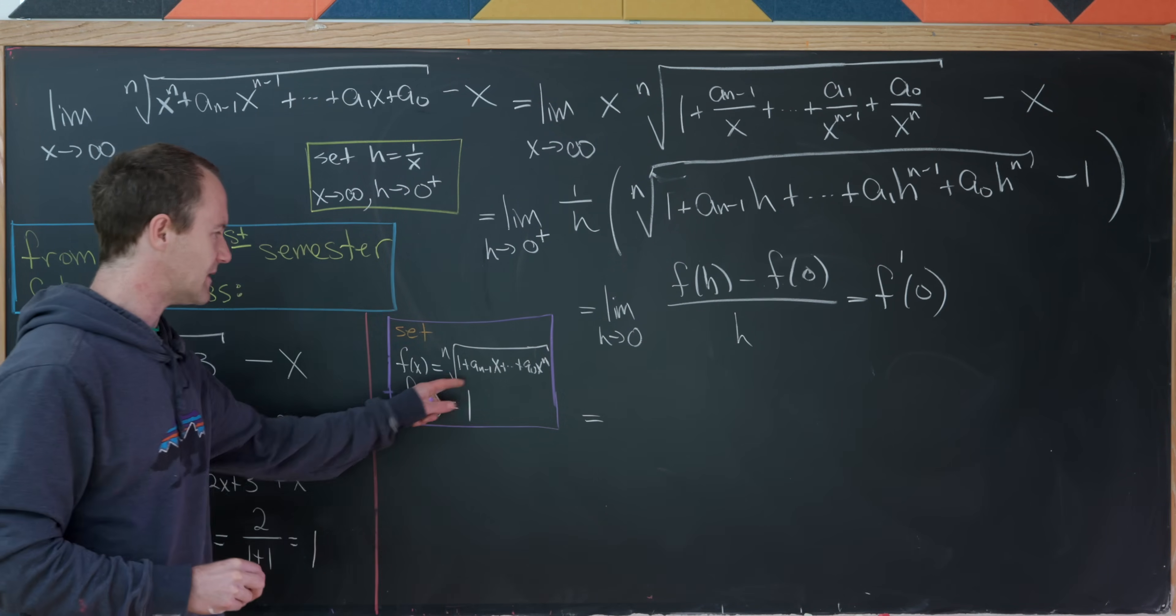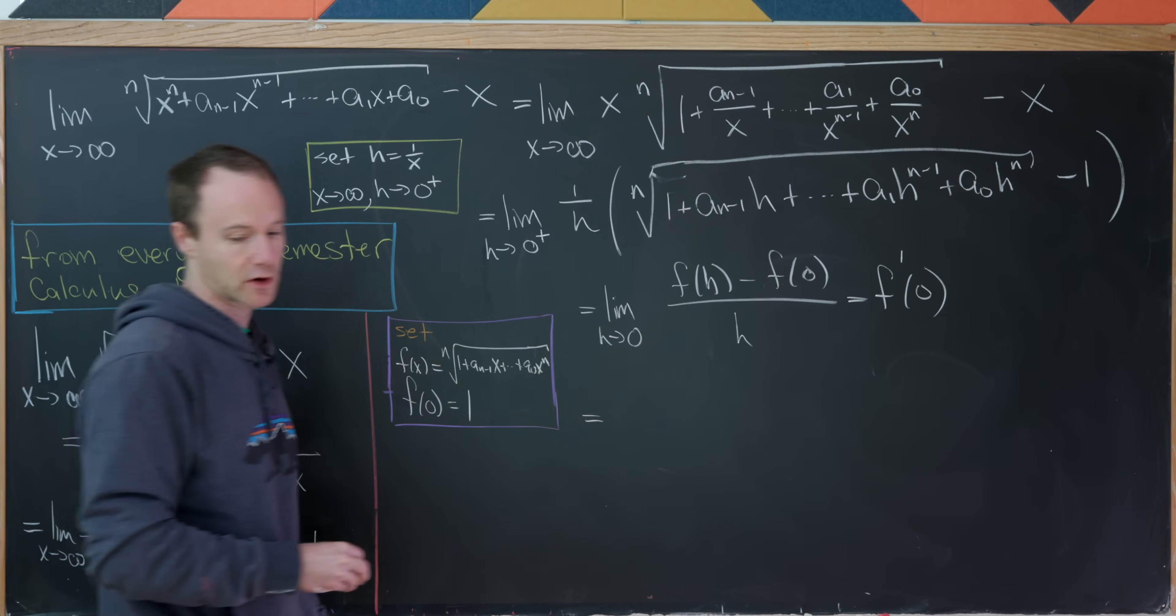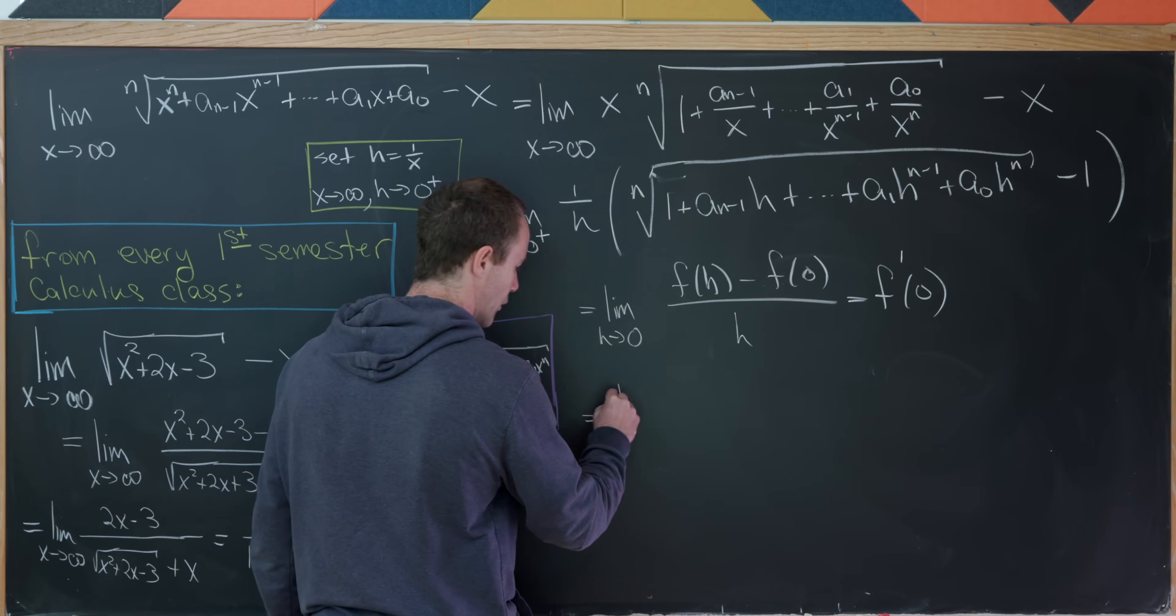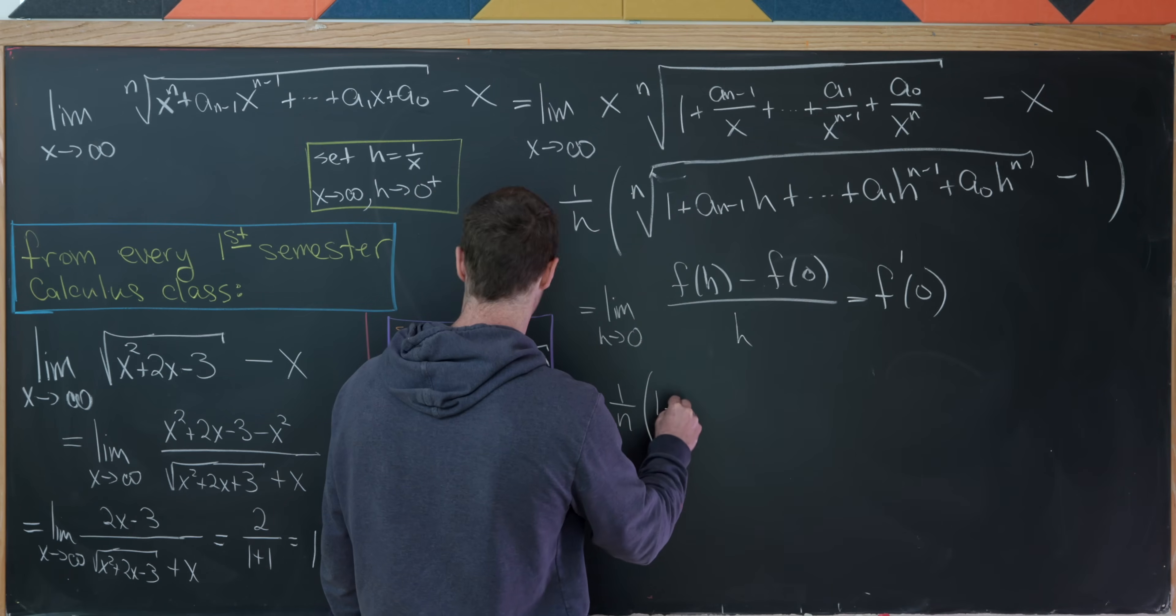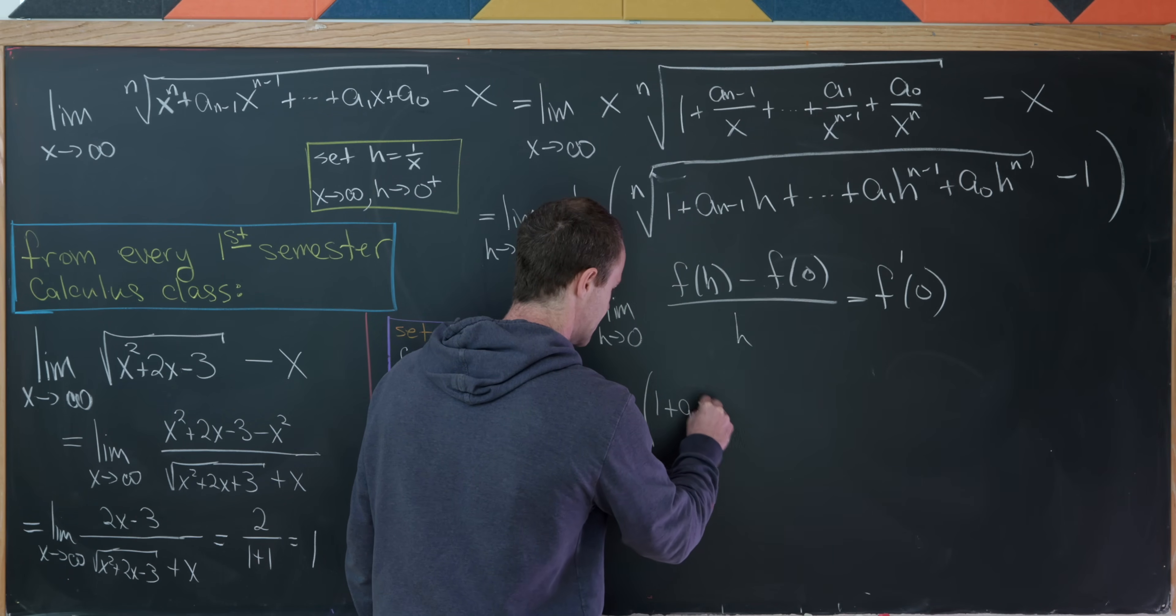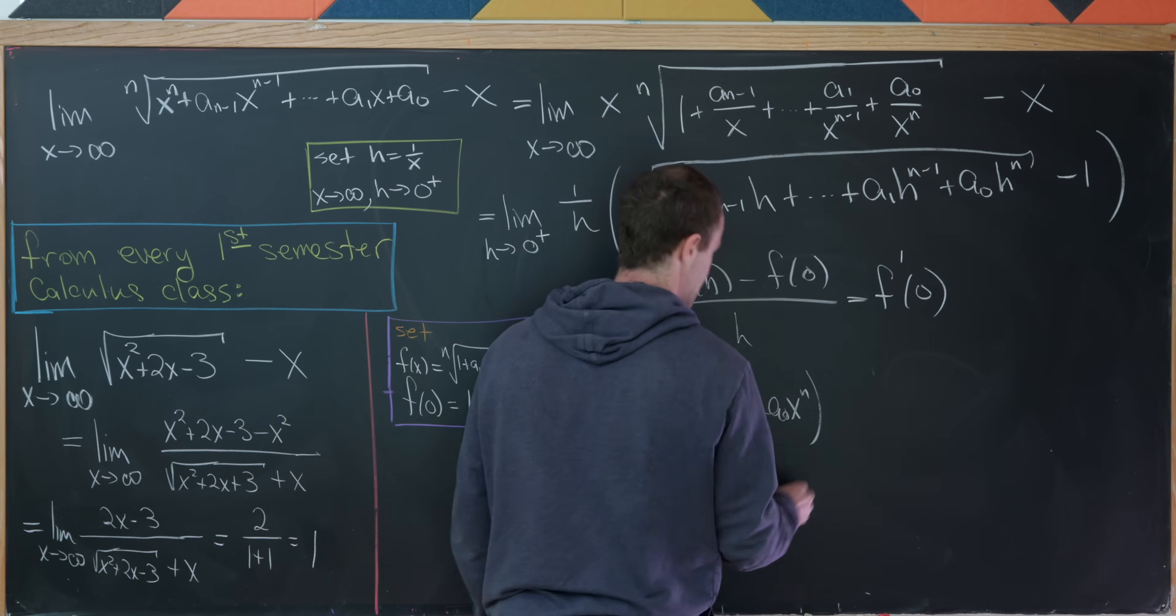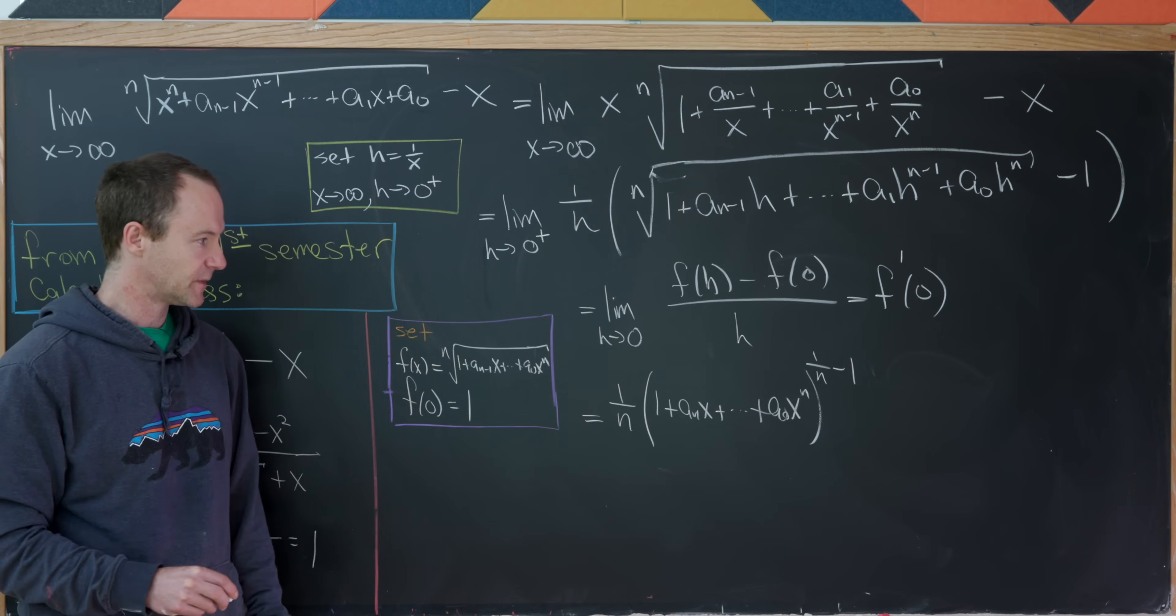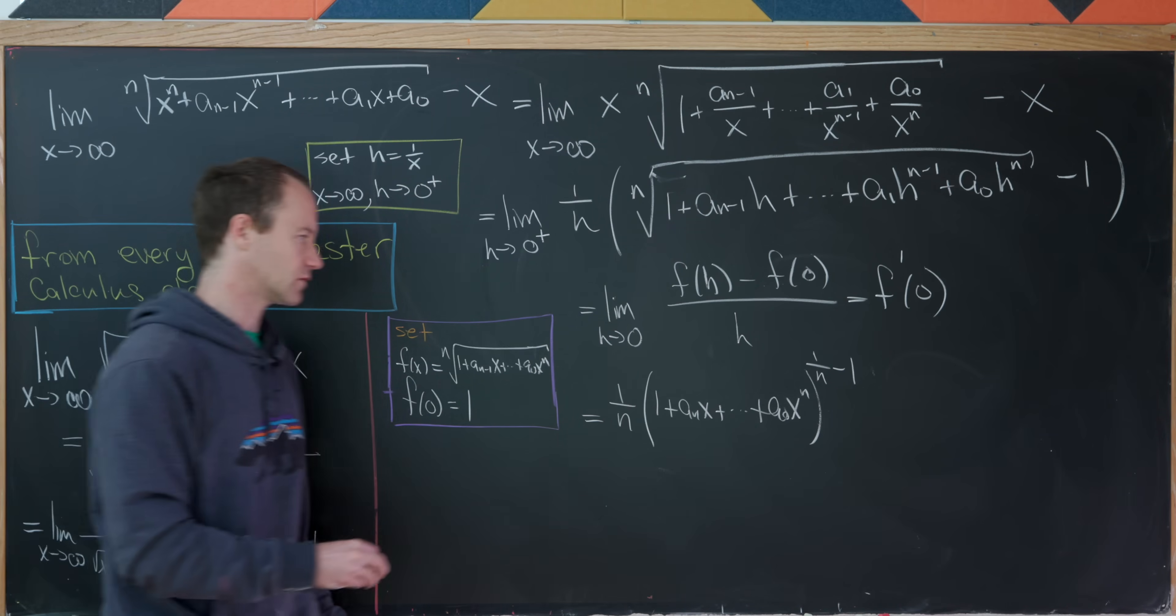So let's maybe keep in mind that this nth root is like a 1 over nth power. And we in fact have to use the chain rule here. So a 1 over n will come down, and then we'll have all of this stuff: 1 plus a sub n times x plus all the way up to a0 times x to the n. And that'll be 1 over n minus 1 by the power rule.